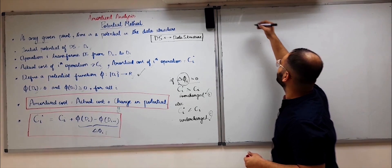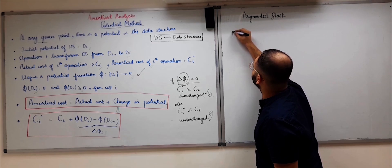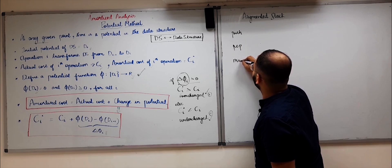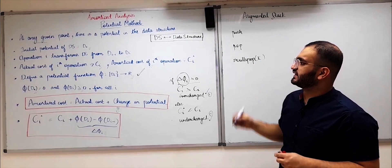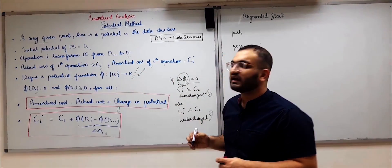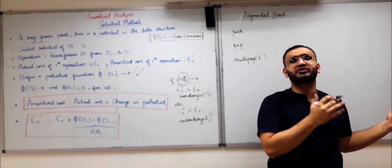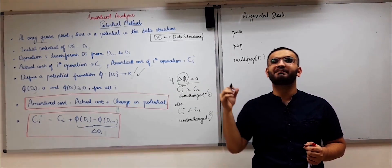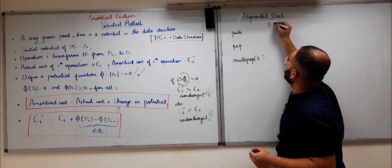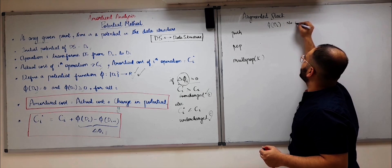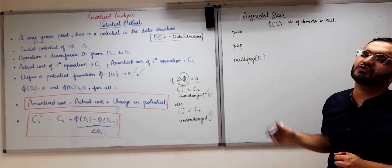Now let us look at the example of the augmented stack. If you have seen my previous video on amortized analysis, you will know that the augmented stack has three operations: push, pop, and multipop. Whenever we use the potential method, it is very important to know the potential function of the data structure — we have to define a potential function Φ for each data structure. This is predefined and chosen because it gives the best analysis of time complexity. The potential function for the augmented stack is: Φ(d_i) = number of elements in the stack.